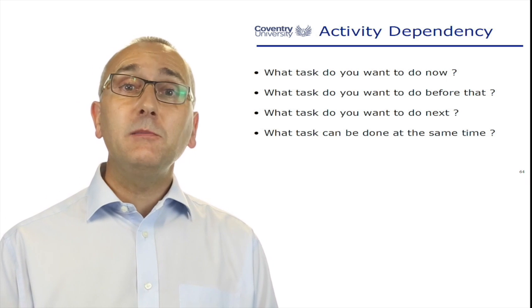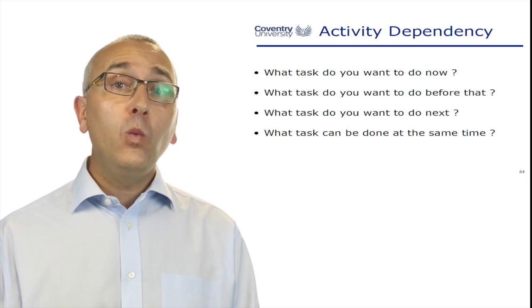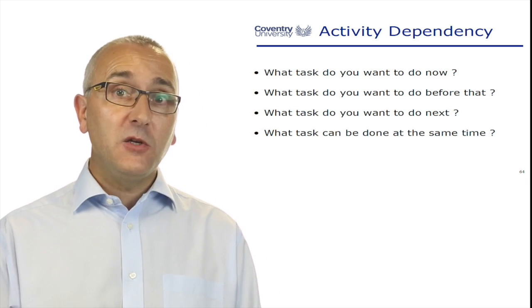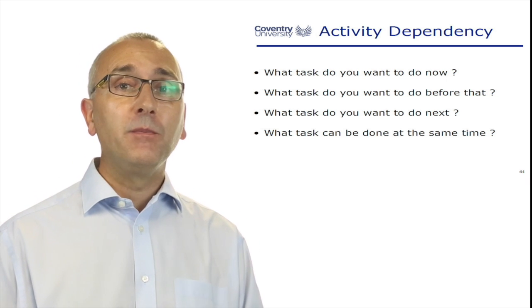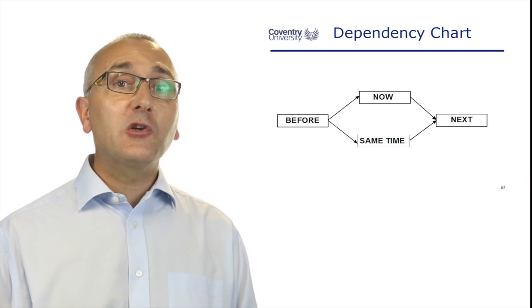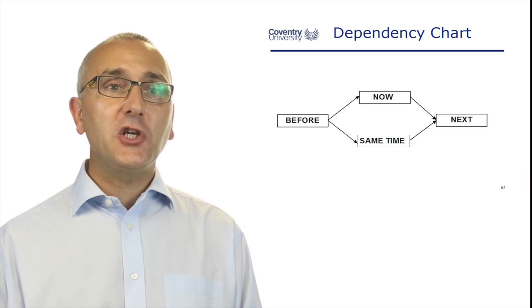To do a dependency chart, we simply answer these four questions: what happens now, what can be done before, what happens next, and what can be done at the same time. We're simply going to create a dependency chart of those tasks.